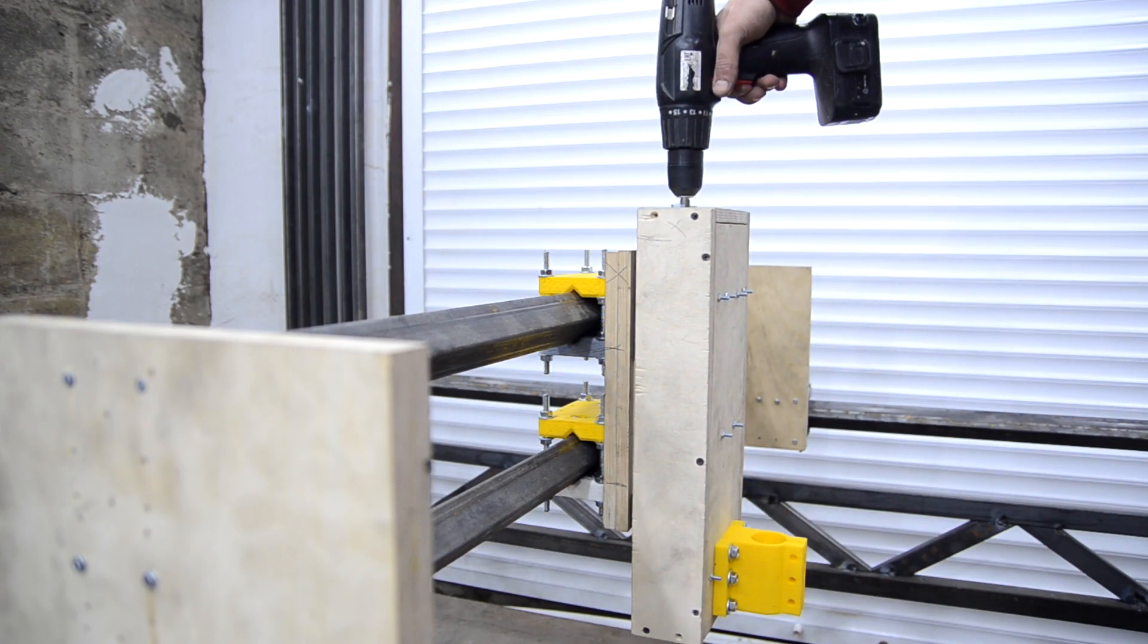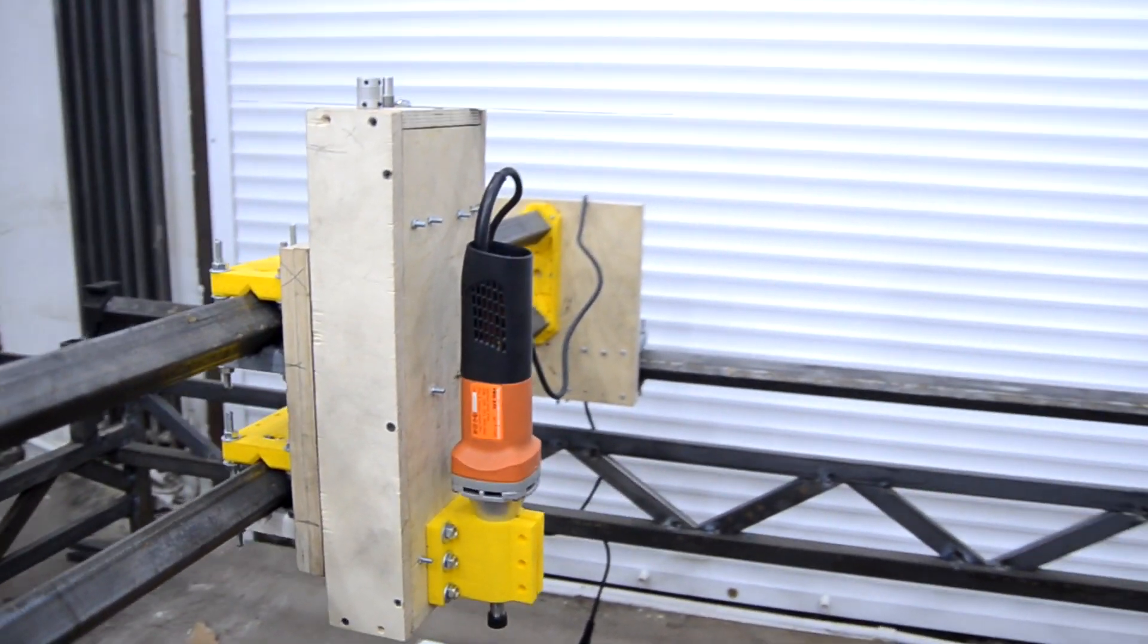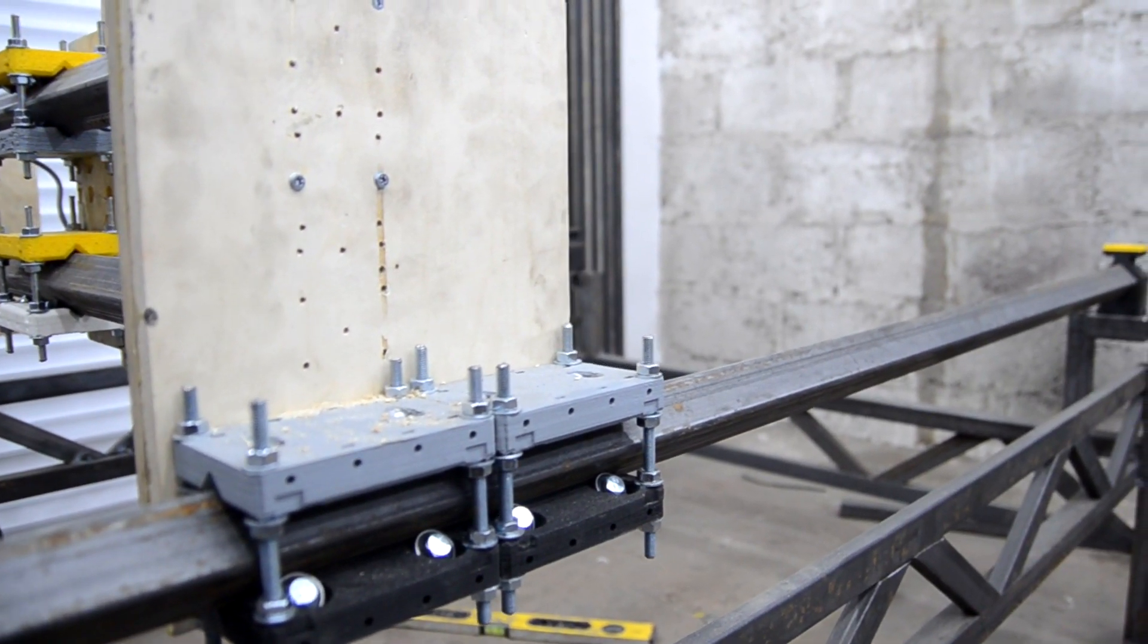The straight grinder with maximum speed of 28,000 turns will serve as a spindle for the machine. Next step will be the installation of the stepping motors NEMO 23 engines on the Y-axis.